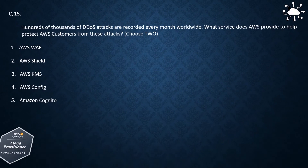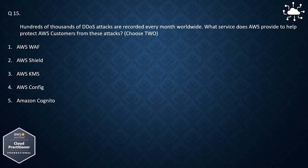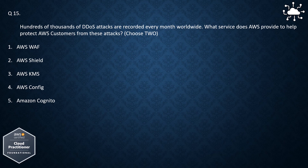Question 15. Hundreds of thousands of DDoS attacks are recorded every month worldwide. What service does AWS provide to help protect AWS customers from these attacks? Choose two. 1. AWS WAF, 2. AWS Shield, 3. AWS KMS, 4. AWS Config, 5. Amazon Cognito. The correct answers are AWS WAF and AWS Shield.